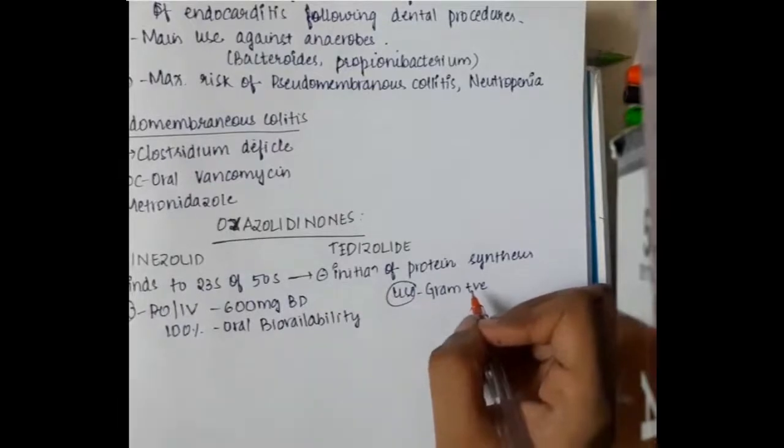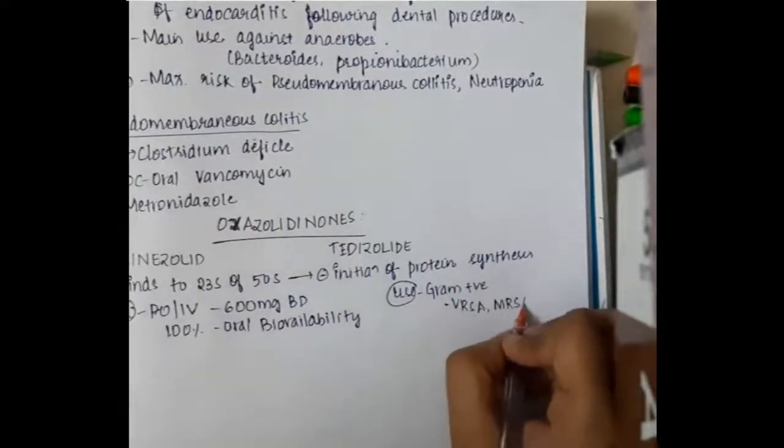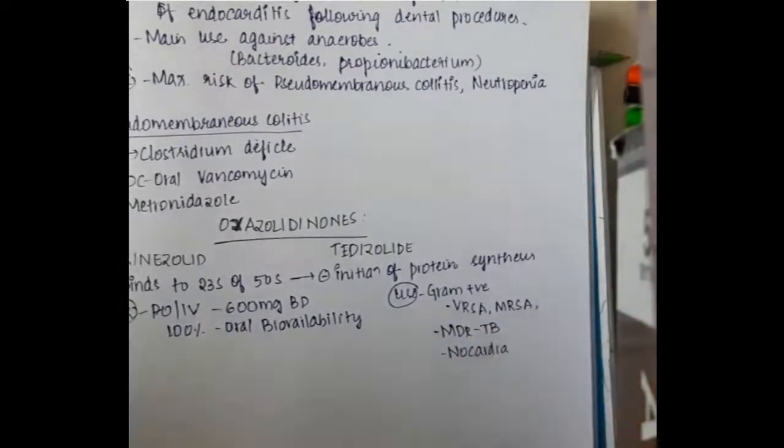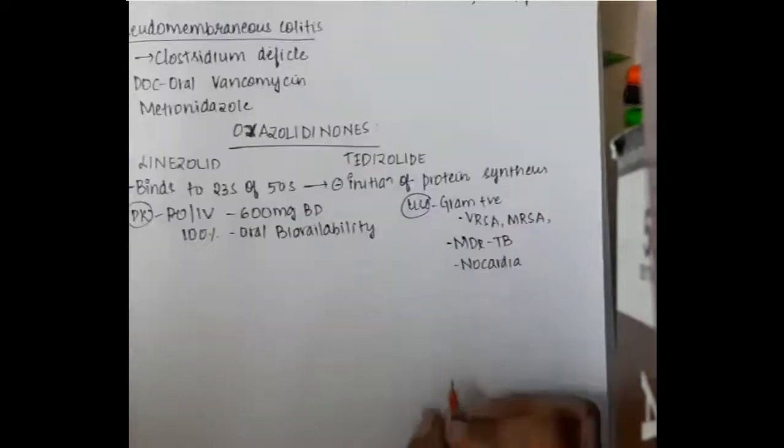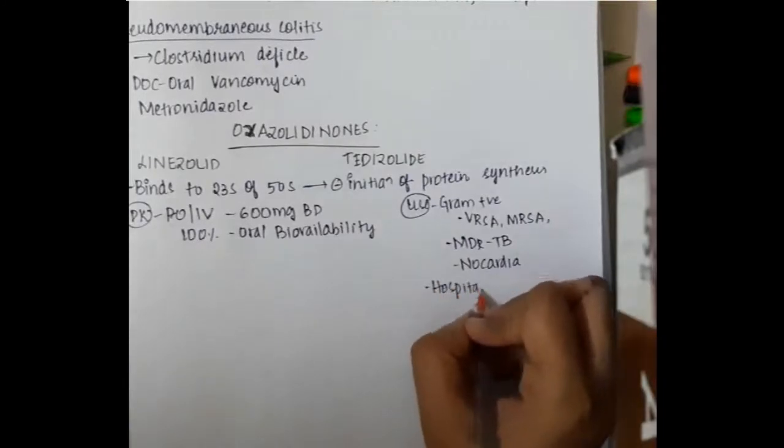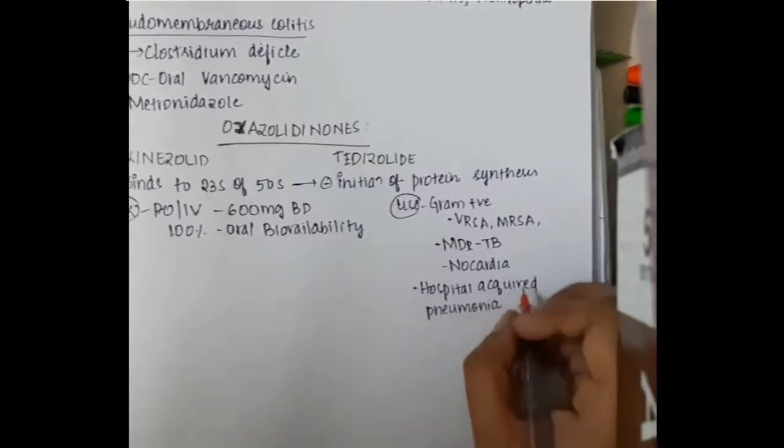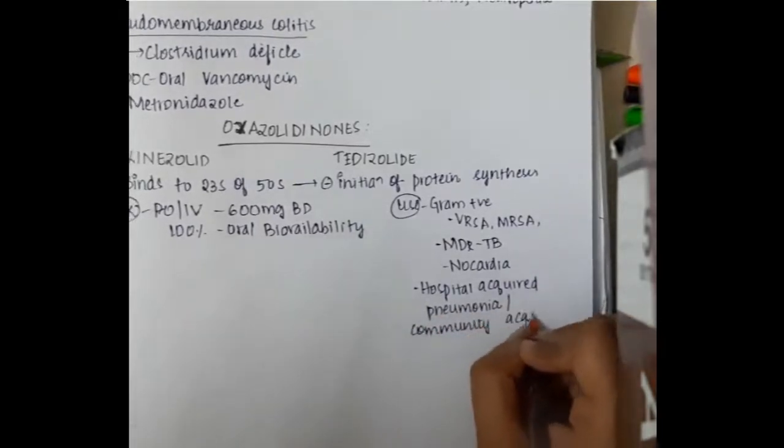Oxazolidinediones are used for gram-positive organisms like vancomycin-resistant Staphylococcus aureus, methicillin-resistant Staphylococcus aureus, multi-drug-resistant tuberculosis, and Nocardia. They are also used in hospital-acquired pneumonia or community-acquired pneumonia.